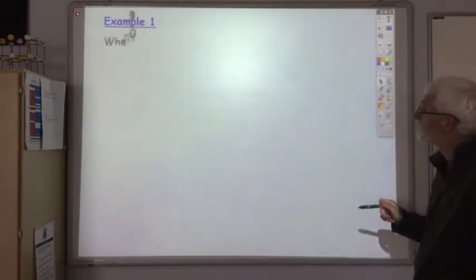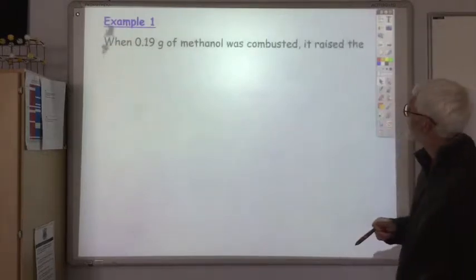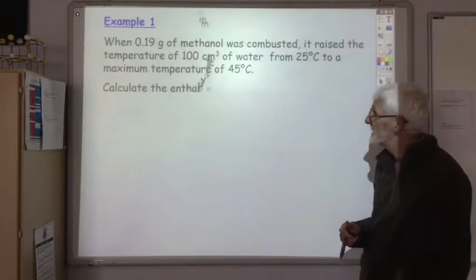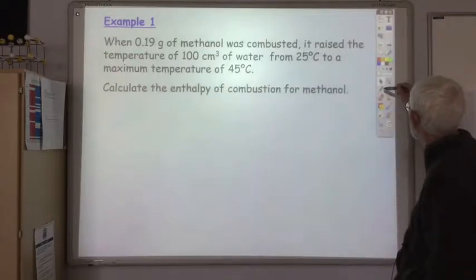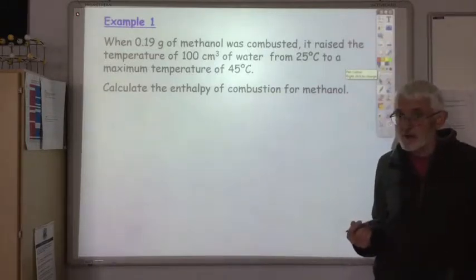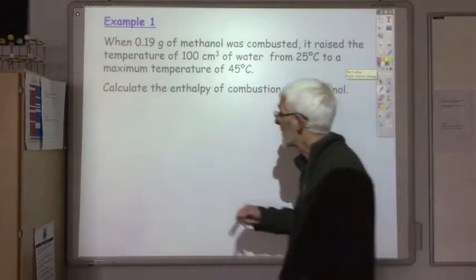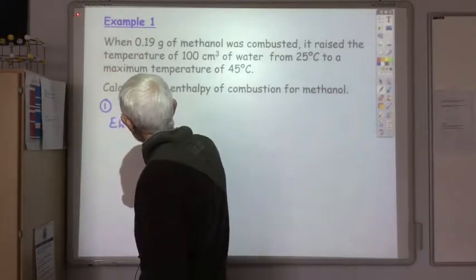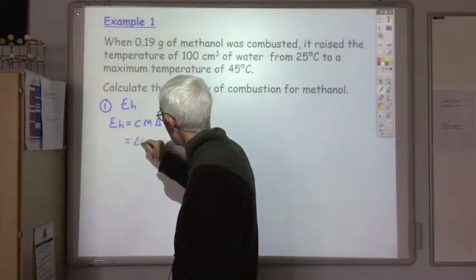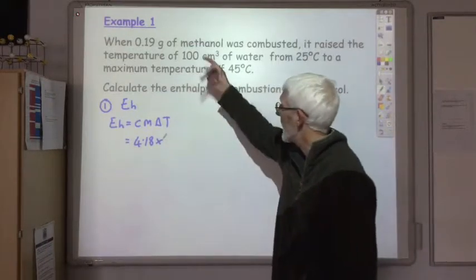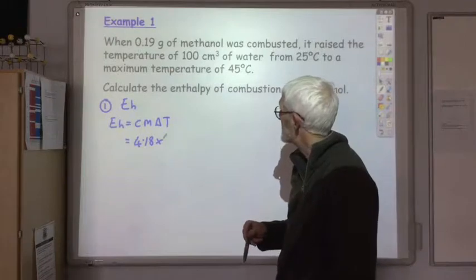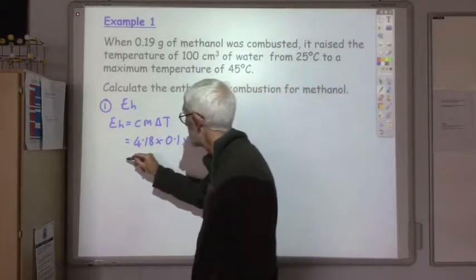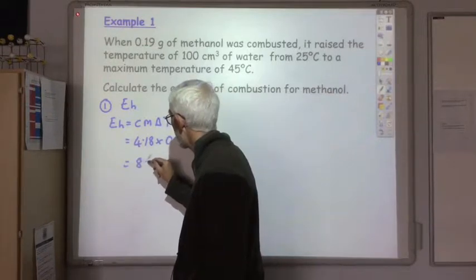Let's look at the first example. When 0.19 grams of methanol was combusted it raised the temperature of 100 cubic centimeters of water from 25 to a maximum temperature of 45 degrees. Calculate the enthalpy of combustion for methanol. In most of these questions there's two parts, and the first part we work out the EH value. So EH = CM∆T which is 4.18 times 0.1 kilograms times 20 degrees, so EH is going to be 8.36 kilojoules.